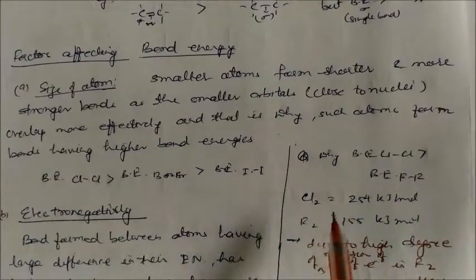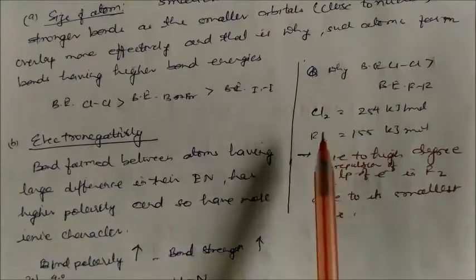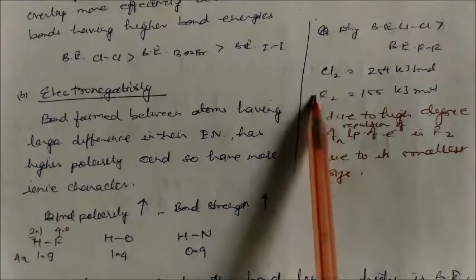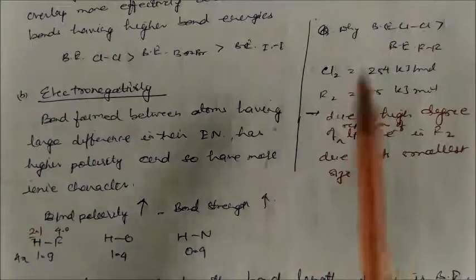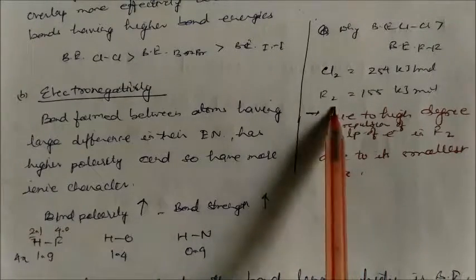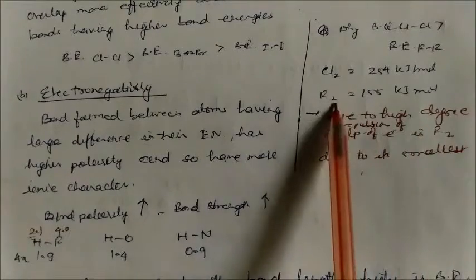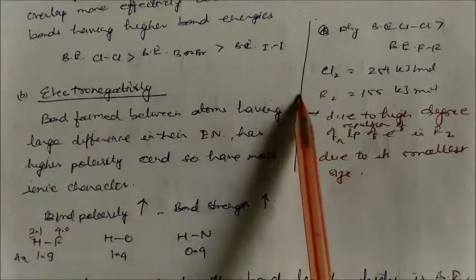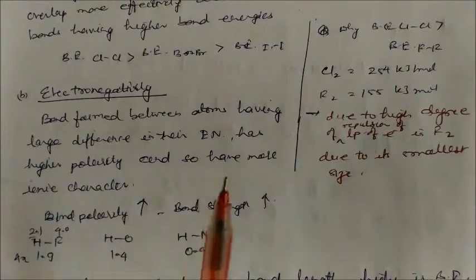However, in the case of halogens, the bond enthalpy of Cl₂ (254 kJ/mol) is greater than that of F₂ (155 kJ/mol), even though fluorine is smaller. This is an exception because there is a high degree of repulsion between lone pair electrons in fluorine due to its smaller size. These electrons repel each other, so fluorine's bond enthalpy is less than that of Cl₂.